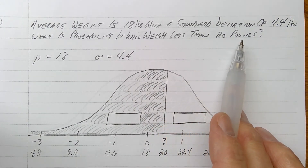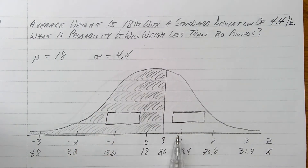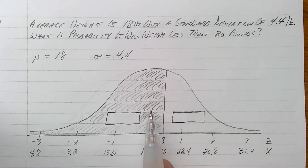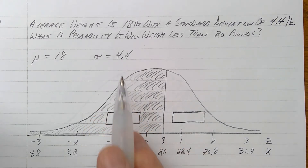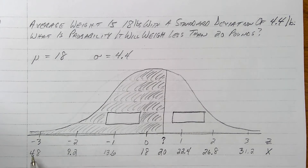So we have a mu of 18, our average, and a standard deviation of 4.4 — that's the width of these steps. Start with your standard normal curve and put your 0, 1, 2, 3 Z numbers on there. Now right beneath them it's handy to get a visual of where these numbers lie. If the average is 18, that goes right under 0, right in the middle where we split the curve into half — 50% to the left and 50% to the right. Moving to the right, add 4.4: 18 + 4.4 = 22.4, then 26.8, then 31.2. Moving left, subtract 4.4 each time. So we have a range from 4.8 pounds all the way up to 31.2 pounds.